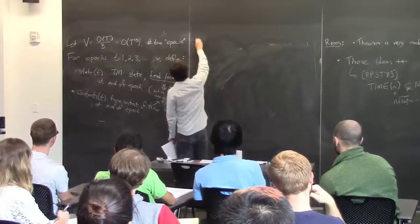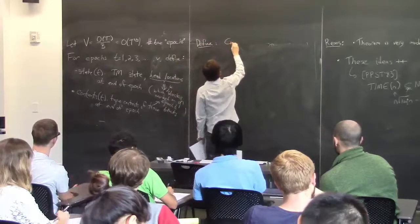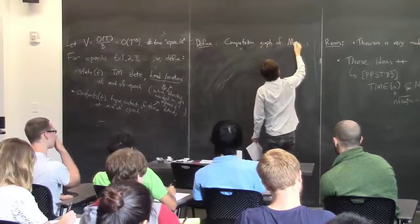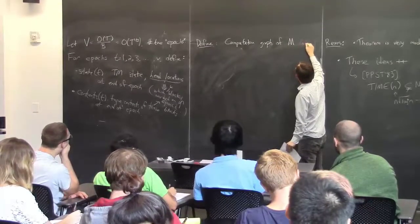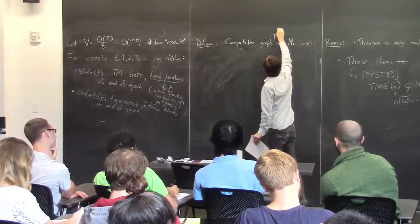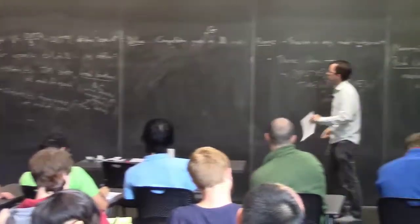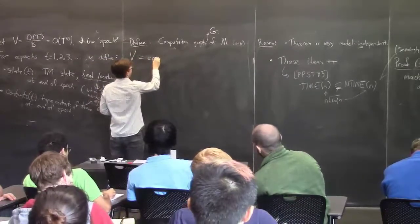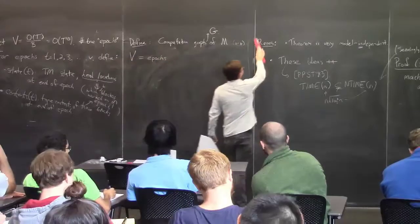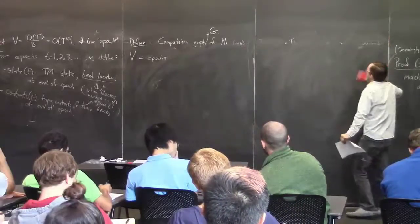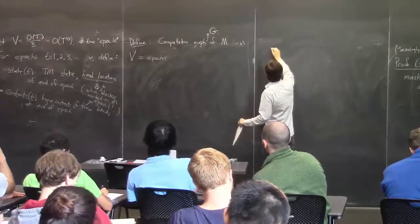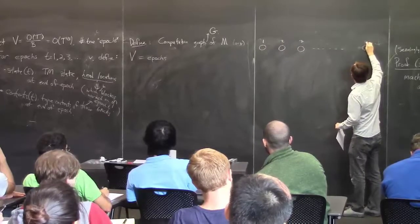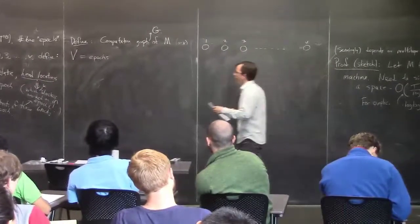So that's exactly what I'd like to get into now. We're going to define something called the computation graph of M on input x. I'll call this graph G. Its vertices V will just be the epochs — so there are V ≈ T^(1/3) vertices representing the epochs.